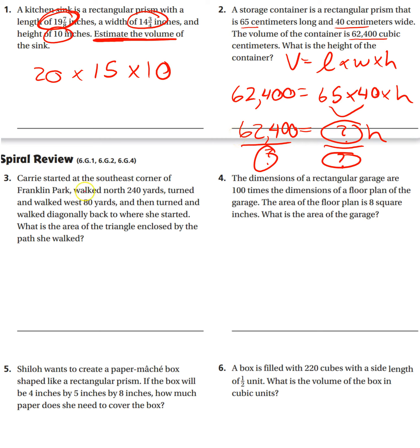Okay, number 3. Carrie started at the southeast corner of Franklin Park, walked north, that would be north, 240, turned and walked west, 80, and then turned and walked diagonally back to where she started. So we formed a triangle. What is the area of the triangle enclosed by the path she walked? So you need to do 240 times 80.